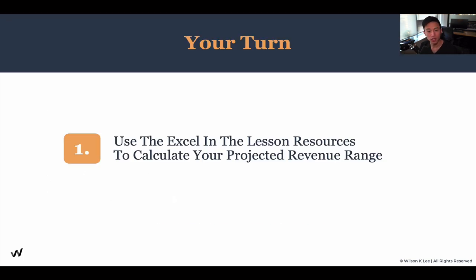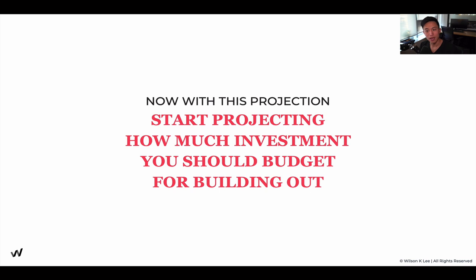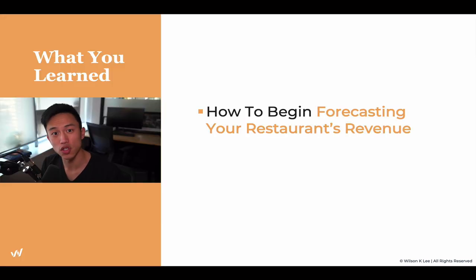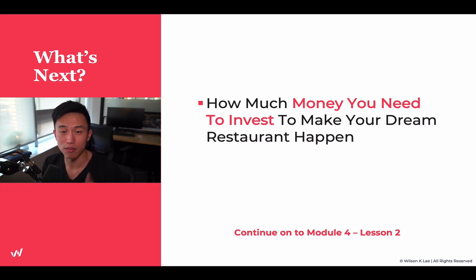Now it is your turn. Use the Excel sheet linked below — download the link and plug in your numbers, your square footage, and it'll spit out the projected revenue for your restaurant. With this projection, we can start projecting how much investment you should budget for your specific build out. In this lesson, you just learned how to forecast your restaurant's revenue using revenue range. Understanding that concept allows you to figure out how much money you need to invest to make your dream restaurant happen. I'll see you guys in the next lesson.